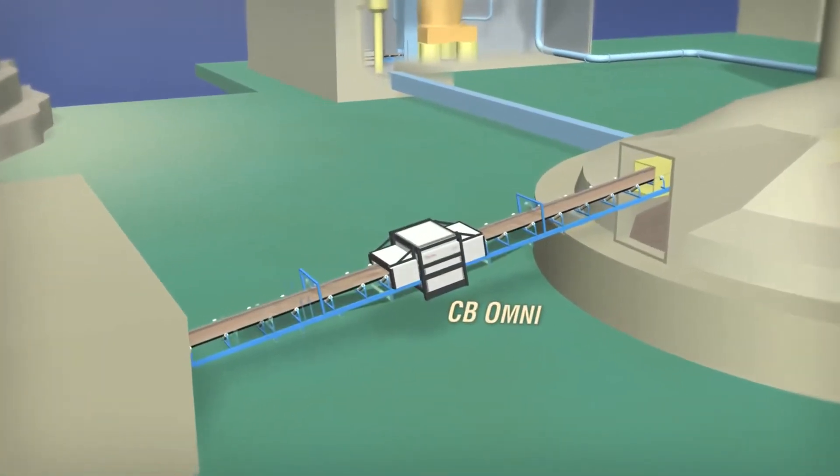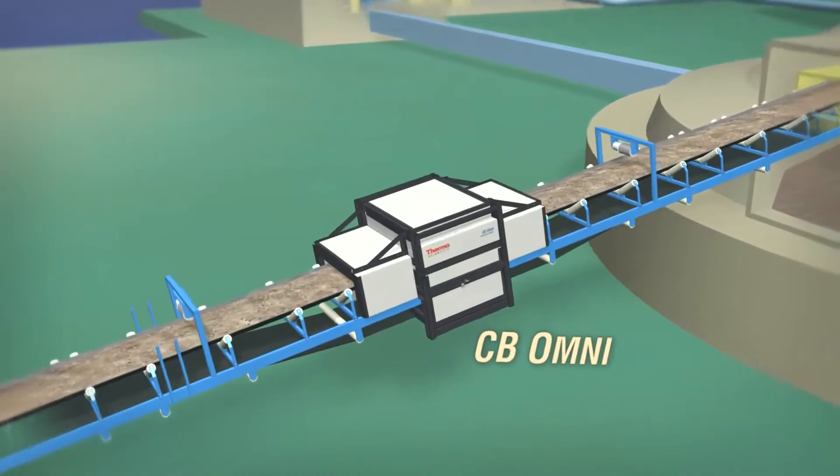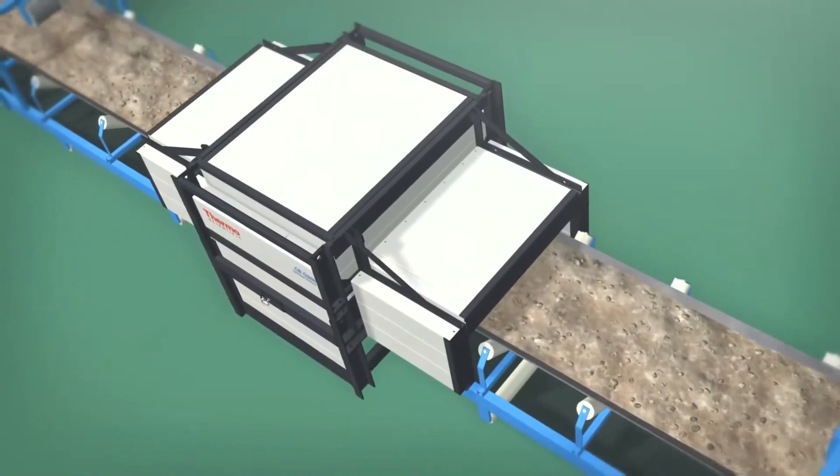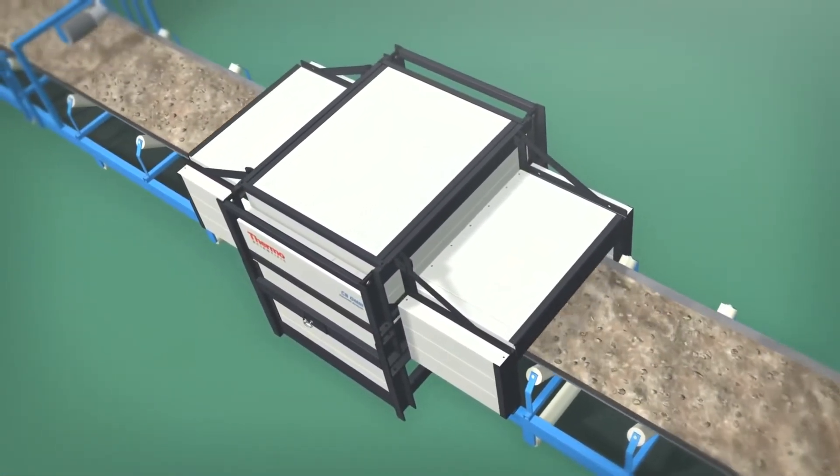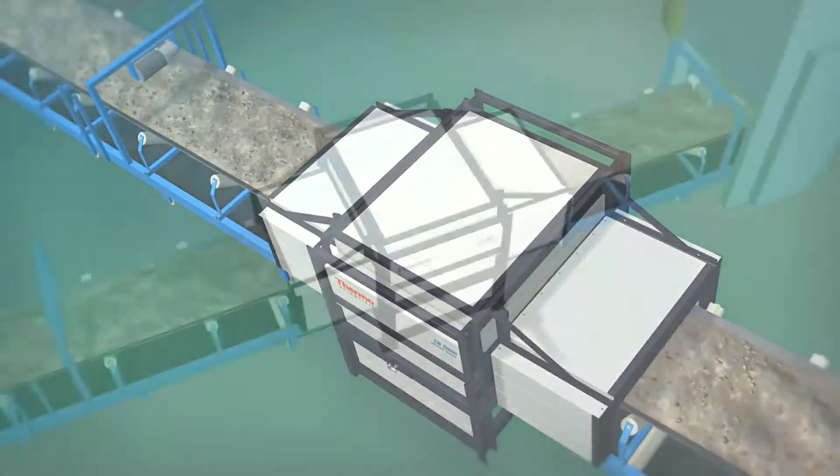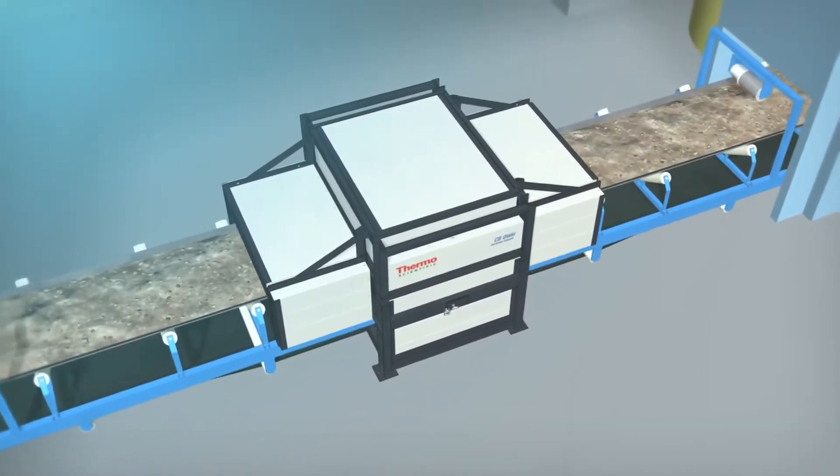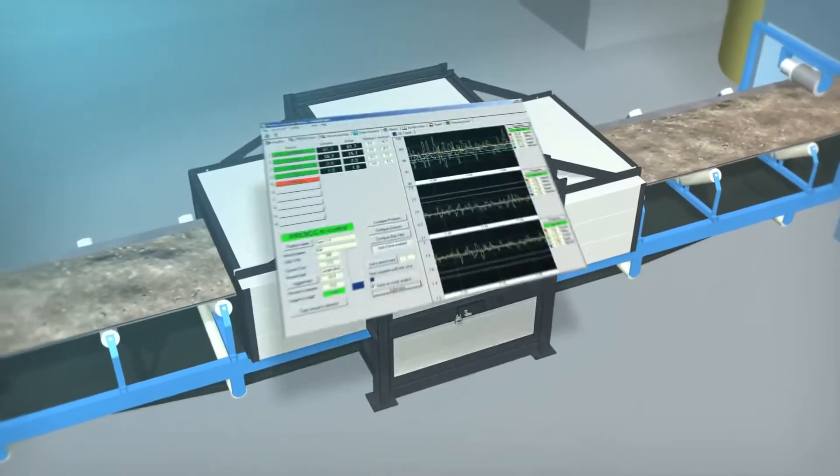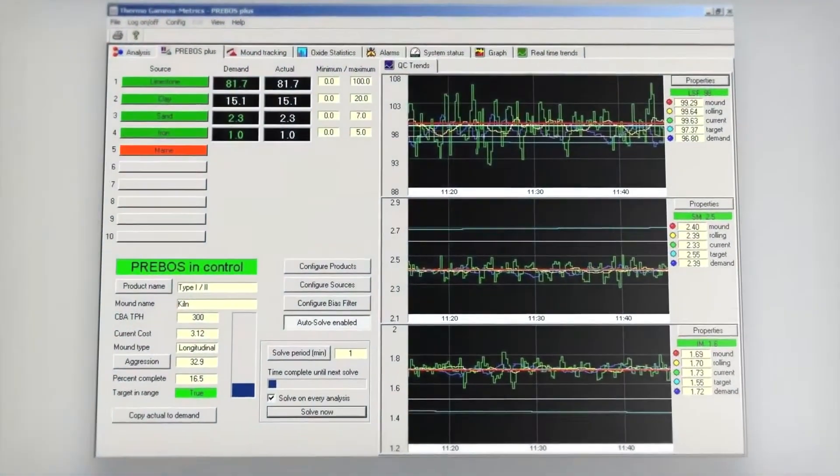Thermo Scientific's CB Omni online elemental analyzer integrates into a conveyor beltline and measures the entire composition of raw materials traveling on the conveyor. The CB Omni provides material chemistry analysis every minute, and this rapid and timely information